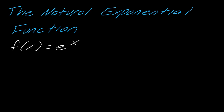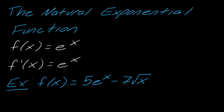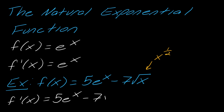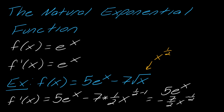Now we have the natural exponential function. If you have e^x, its derivative is just e^x — the easiest derivative we have. For example, using the constant multiple rule, nothing happens to the 5, so the derivative of 5e^x is 5e^x. Then for the −7√x term, since √x = x^(1/2), applying the power rule gives −7 · (1/2)x^(1/2 − 1), so the full derivative is 5e^x − (7/2)x^(−1/2).